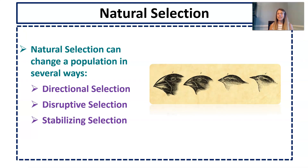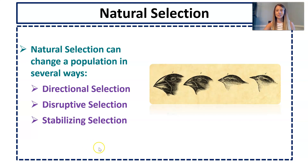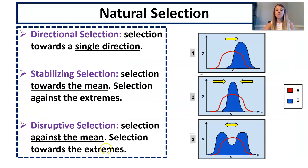Natural selection can change a population in different ways depending on the change in the environment. Natural selection can be directional, disruptive, or stabilizing. Go ahead and jot down your quick definitions and I'm going to give you time to draw the graphs as well.